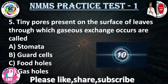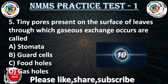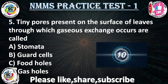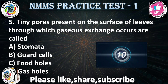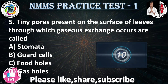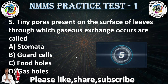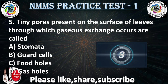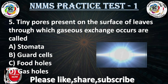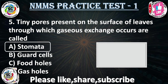Question No. 5: tiny pores present on the surface of the leaves through which gases are exchanged — what are they called? Option A: stomata, Option B: grid cells, Option C: food holes, Option D: gas holes. Your time starts now. The tiny pores present on the surface of the leaf are called stomata.